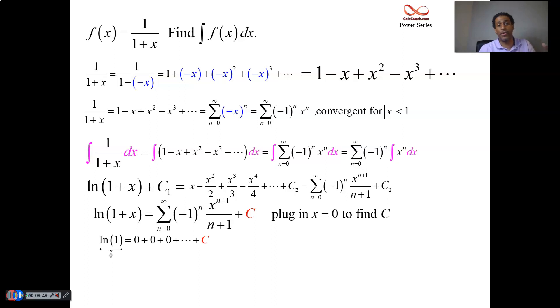Left-hand side, plug in 0 will give you a natural log of 1, which is 0. So then the constant ends up being 0. And now we have number 3 on our list.